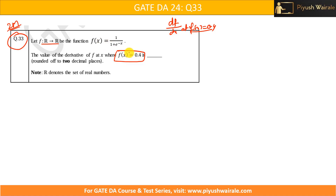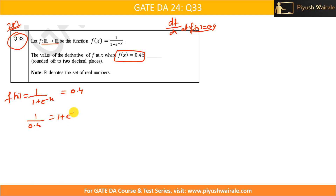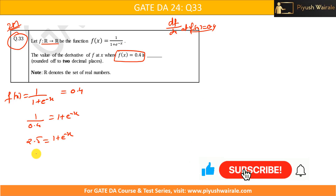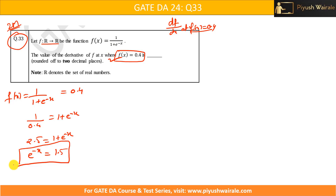First, we equate f(x) to 0.4: 1 / (1 + e^(-x)) = 0.4. Rearranging, 1 + e^(-x) = 1/0.4 = 2.5, so e^(-x) = 1.5. This is what we get from the condition f(x) = 0.4.